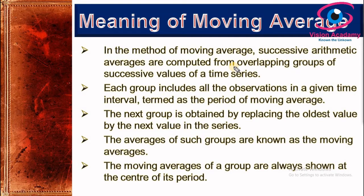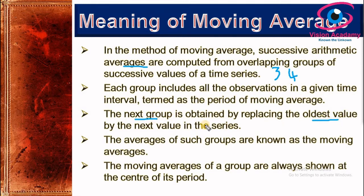In this method, we will firstly make a group for calculating an average from the given observations. There will be similarity between each group. For example, we may calculate three years moving average, four years moving average, or five years moving average. For a three years moving average, we consider the first three observations and take a centered average of those three observations.